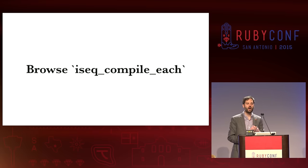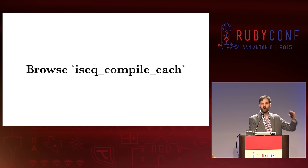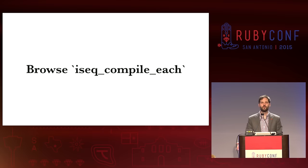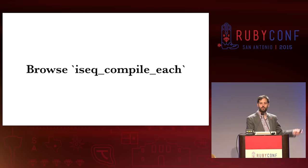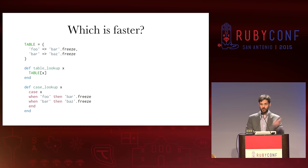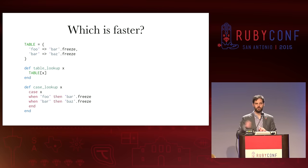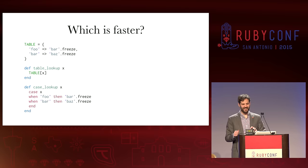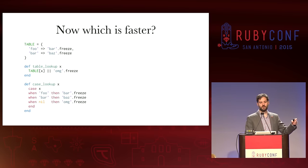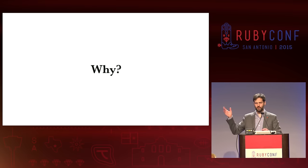Another thing I encourage you to do is browse iseq_compile_each. I know it's over 2,300 lines long, but it's chunked up into a switch statement so you can find various constructs in there. If you want to understand how Ruby handles if statements, case statements, begin, or any of those things, you can look it up in this particular block. For example, we can look at this code and ask: which one of these is faster? I tweeted about this a little while ago. If we have time for Q&A, maybe I'll tell you. Now I've changed only one line — which one is faster? And why?